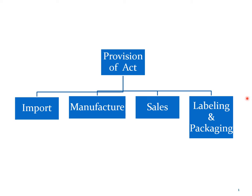With that we have completed the administrative part of the DNC Act 10 rules. Now we are going to look at the provisions of the DNC Act 10 rules which are applicable to the import of drugs, the manufacture of drugs, sale of drugs, and labeling and packaging, which is considered as a separate activity under the provisions of the DNC Act 10 rules.